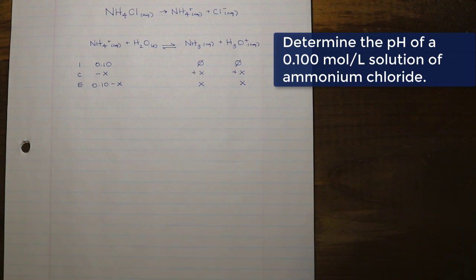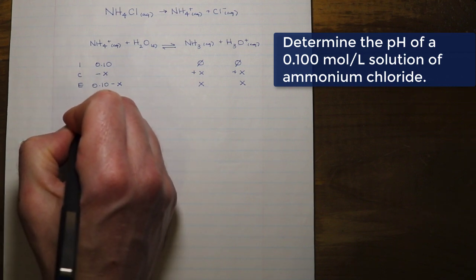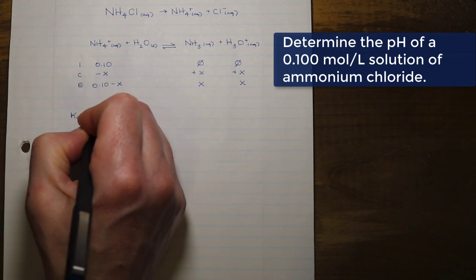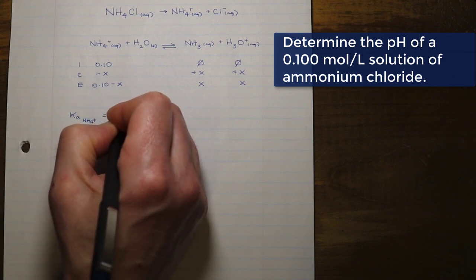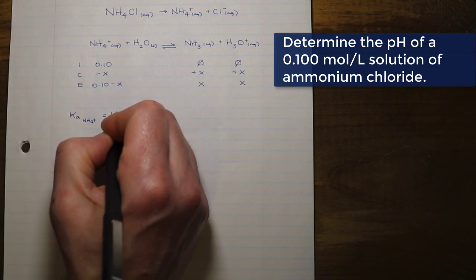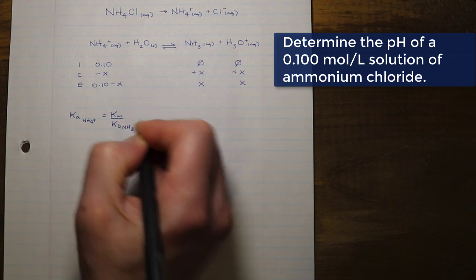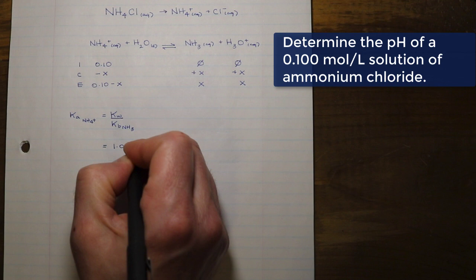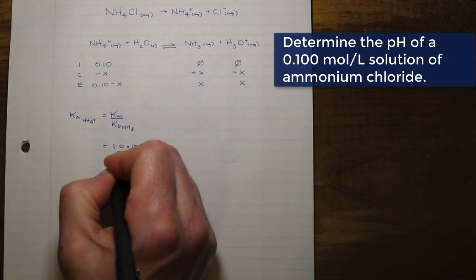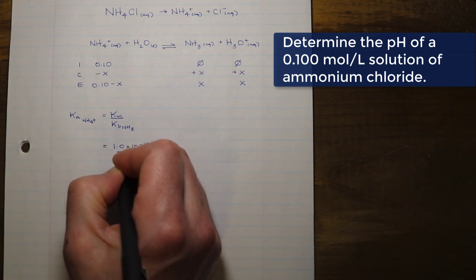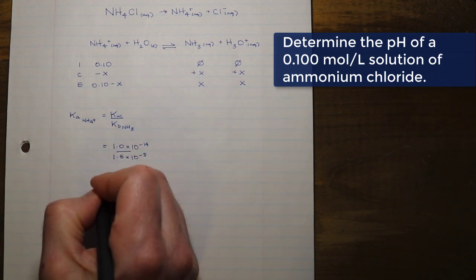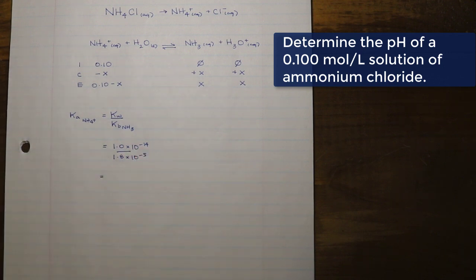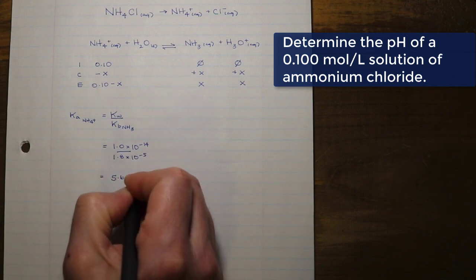We should note that this is behaving as an acid, but if you look up in your reference packages you will see that we don't have readily available values for conjugates. So we're going to have to figure out what the Ka is of the ammonium ion. In order for us to figure out the Ka of the ammonium ion, we are going to have to use the Kw value and the Kb for the conjugate of ammonium ion, which is ammonia. We can use our reference package to figure out the Kb for ammonia: 1.8 times 10 to the negative 5. Completing this calculation we've got a Ka of 5.6 times 10 to the negative 10.